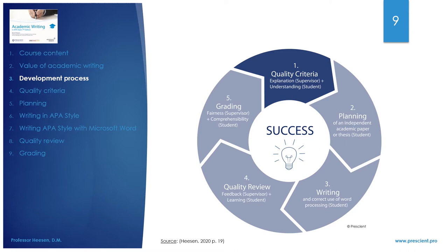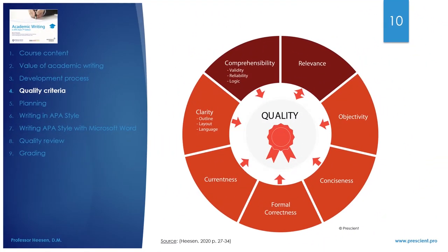Do you know what makes you happy or successful? Often it is much easier to know what makes us unhappy and what is not successful. This is called the via negativa. The same applies to research and publication. We use examples of what shall be avoided in order to reach high quality work. The philosophy is to eliminate the errors and the result will be great.